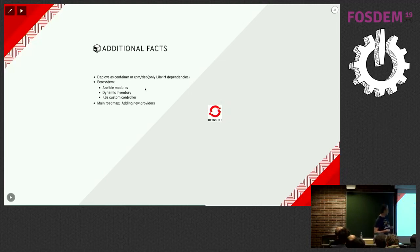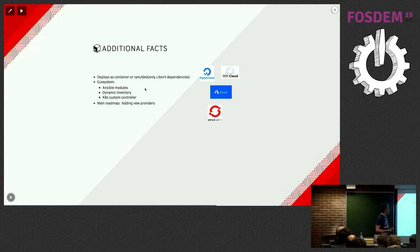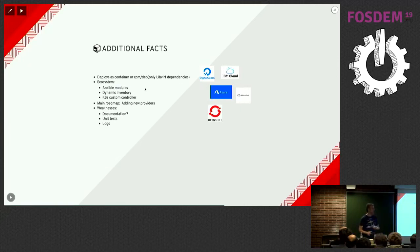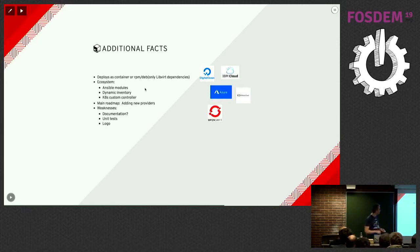About the roadmap: the idea is mainly to add new providers — Digital Ocean, Azure, IBM Cloud, and Alibaba Cloud — which are the top cloud providers not yet coded in this tool. About weaknesses: I believe the documentation should be improved, particularly the installation process. Tests were removed at some point and need reshaping. The logo probably needs some improvements too.